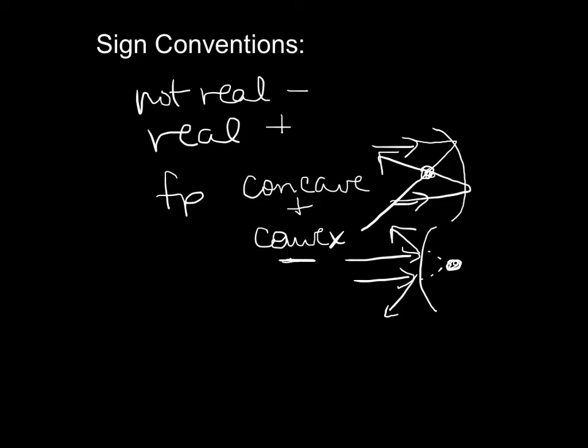Now distances, your DI, your object distance DO is pretty much always positive. Your image distance, if it's real, it's going to be positive. Because remember, a real image is formed when the light rays really cross. You have real light rays.